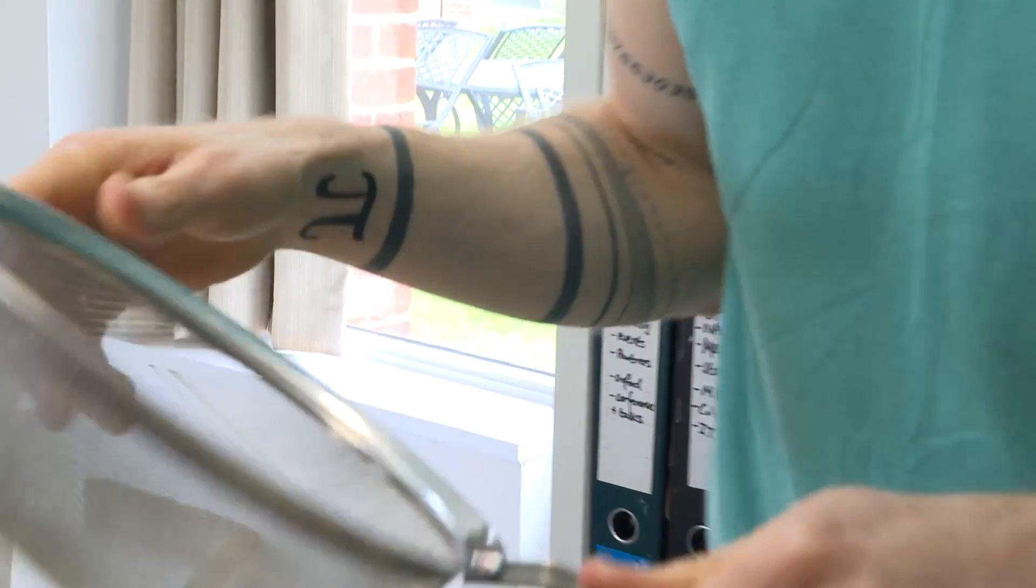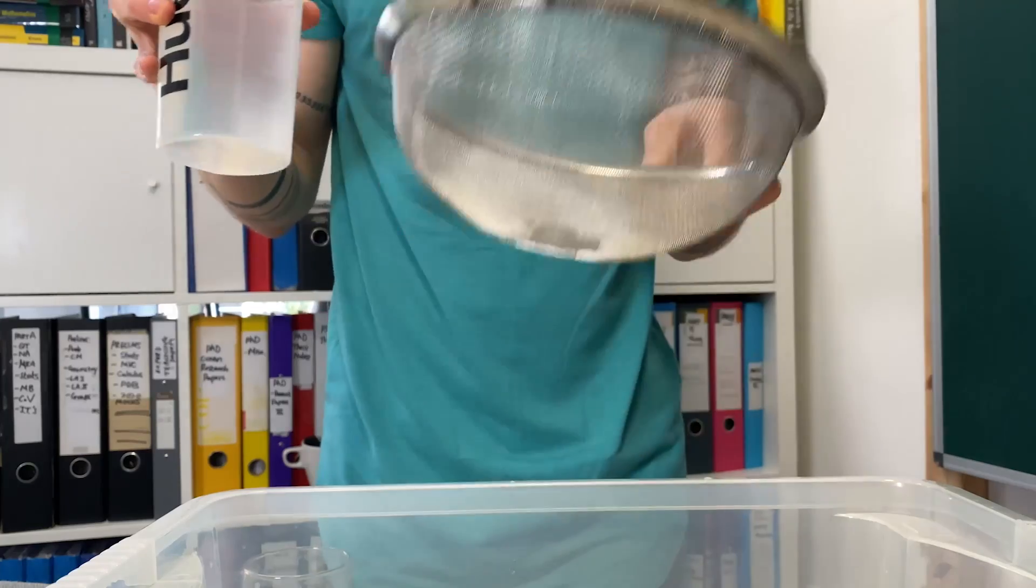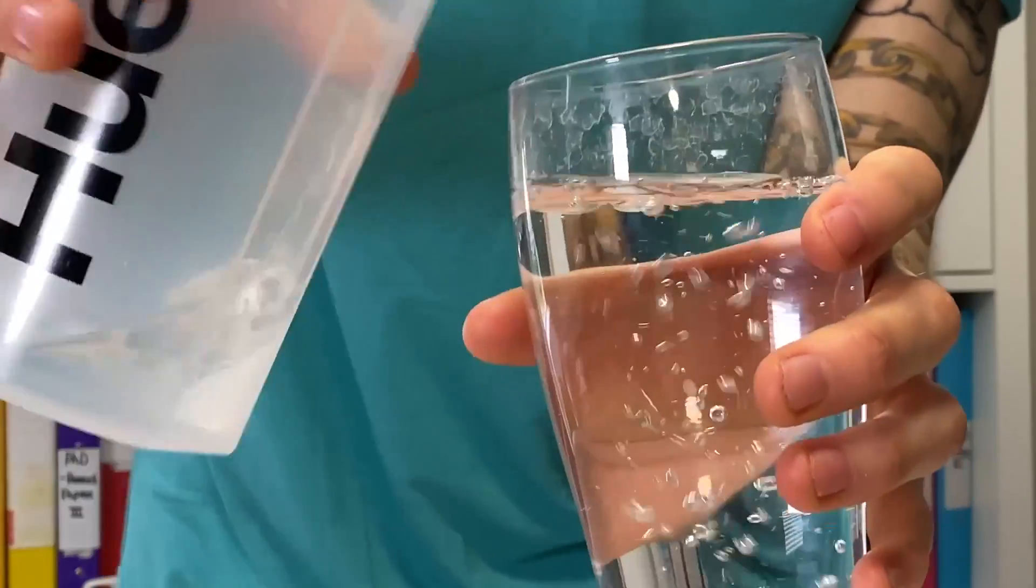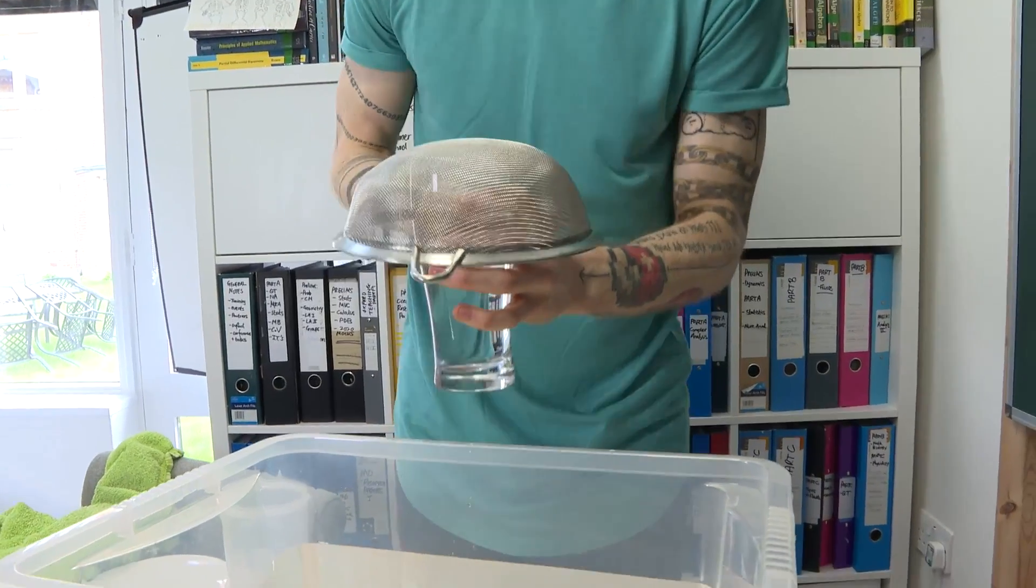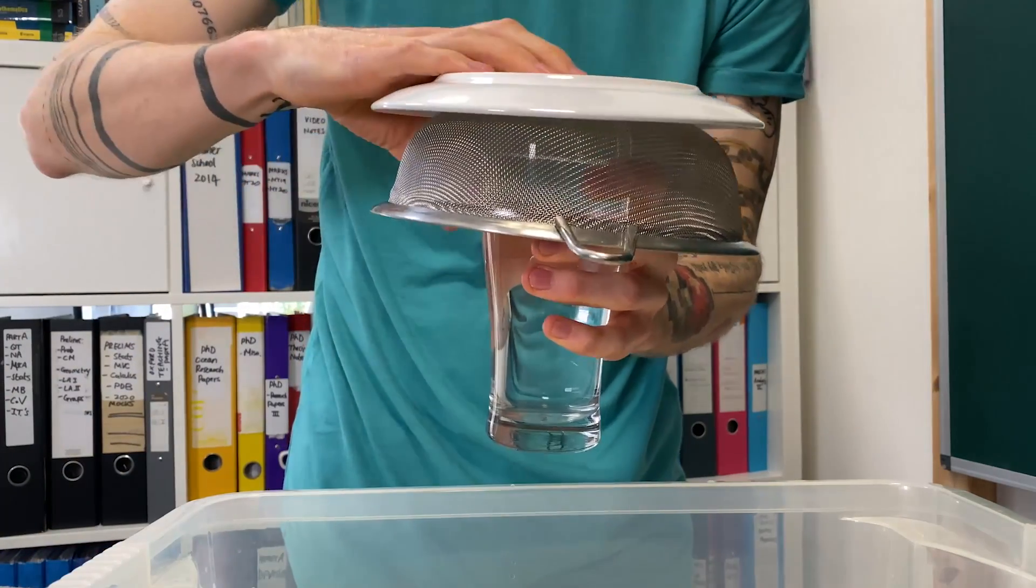Here I have a sieve which has some holes in, so when I pour the water goes through the sieve. Right, so I'm not cheating. Fill up my pint glass, put the sieve on top, and then I'm going to get this plate and position it on here.